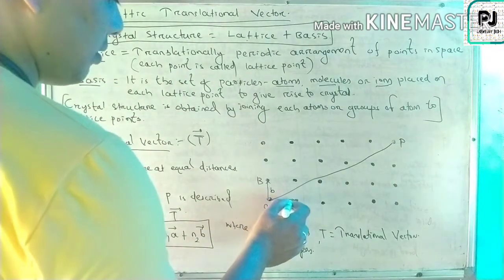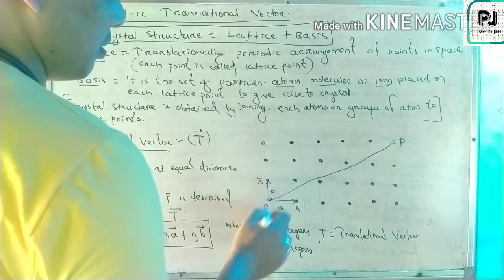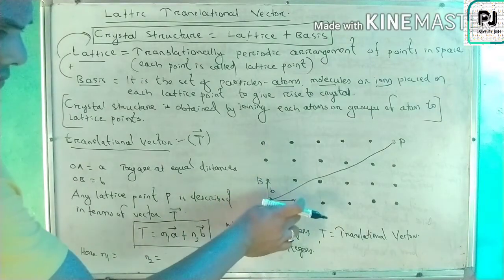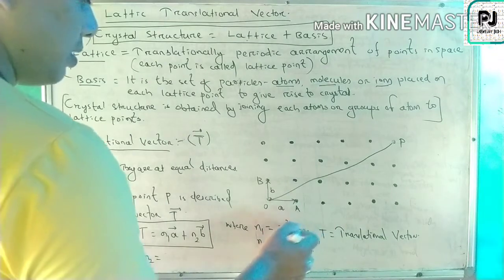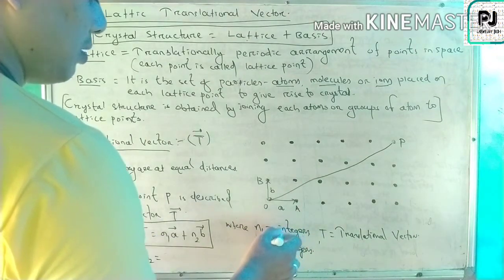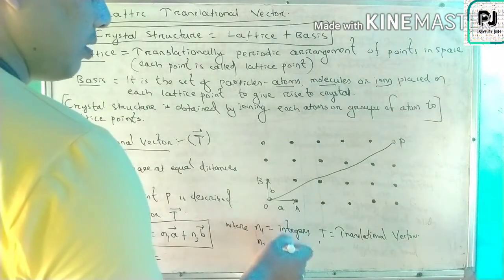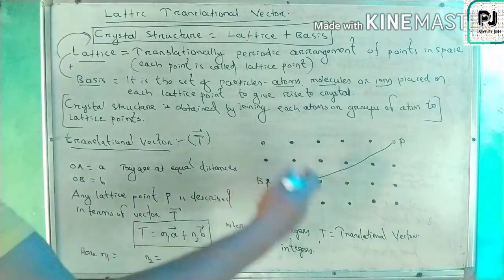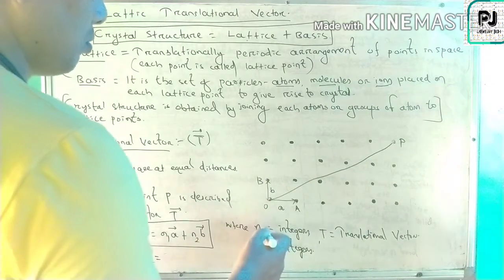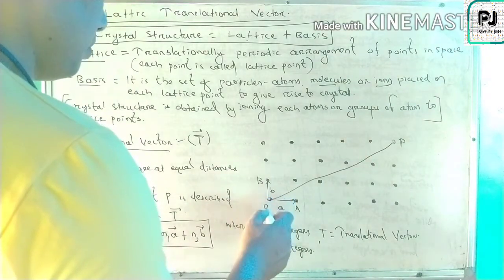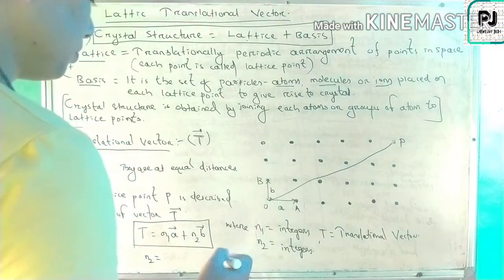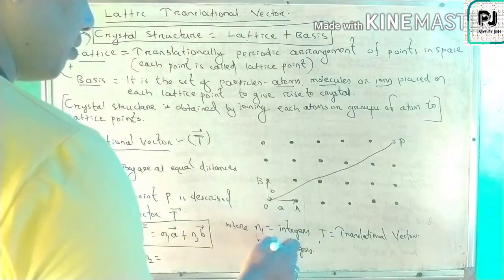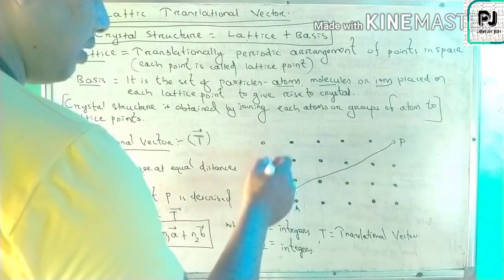The translational vector T is equal to n1·a + n2·b. Here a and b are the equal distance vectors. n1 and n2 are integers. T is the translational vector. This formula is for the two-dimensional case. The translational vector T equals n1·a + n2·b, where n1 and n2 are integers.